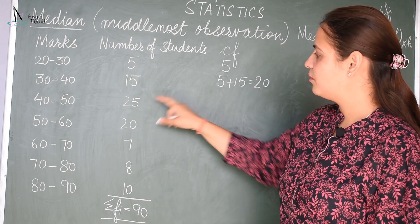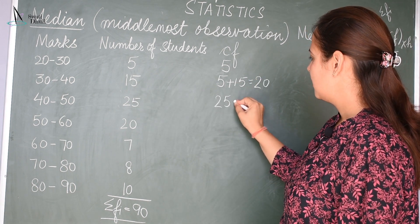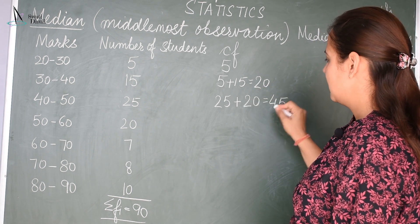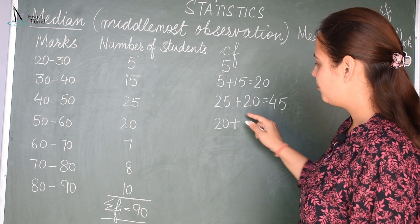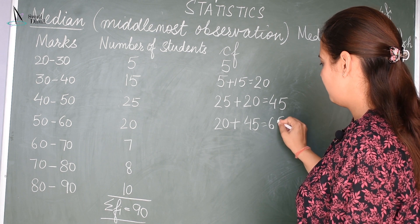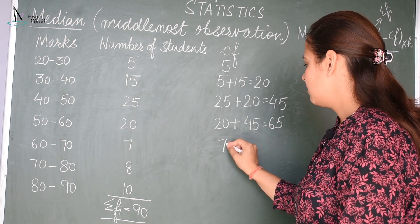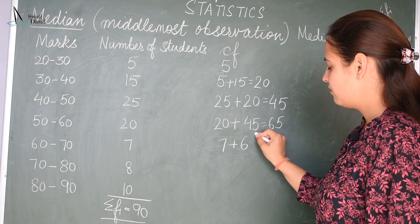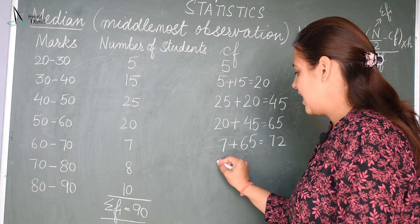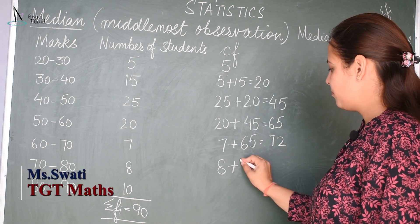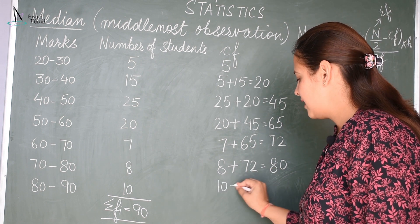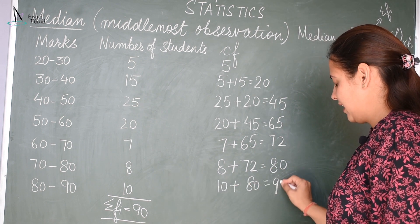Next, the frequency is 25 plus the preceding cumulative frequency 20, that gives 45. Then 20 added to the preceding CF of 45 gives 65. Then 7 plus 65 gives 72. Then 8 plus 72 gives 80. And finally, 10 plus 80 gives 90.